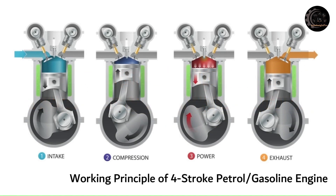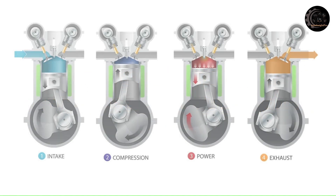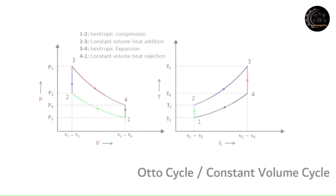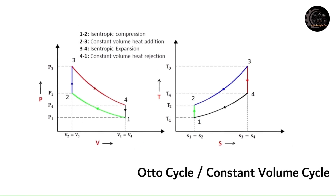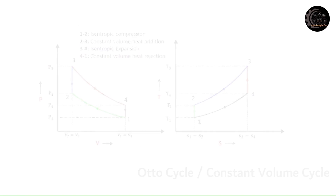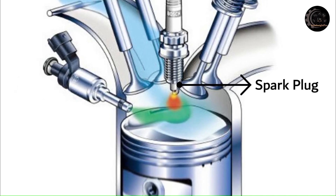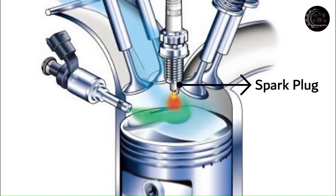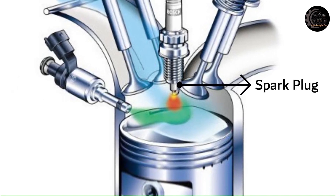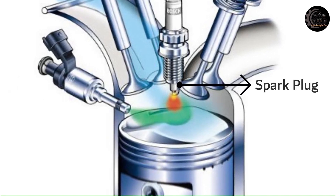The working principle of a four-stroke engine, whether it runs on petrol, gasoline, or diesel, is essentially the same. The spark plug fitted at the top of the cover initiates the ignition of the petrol in a four-stroke engine.